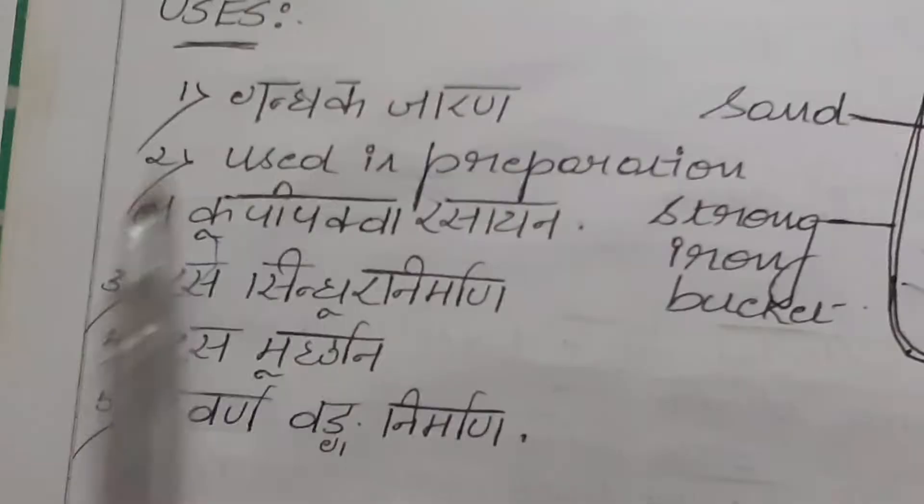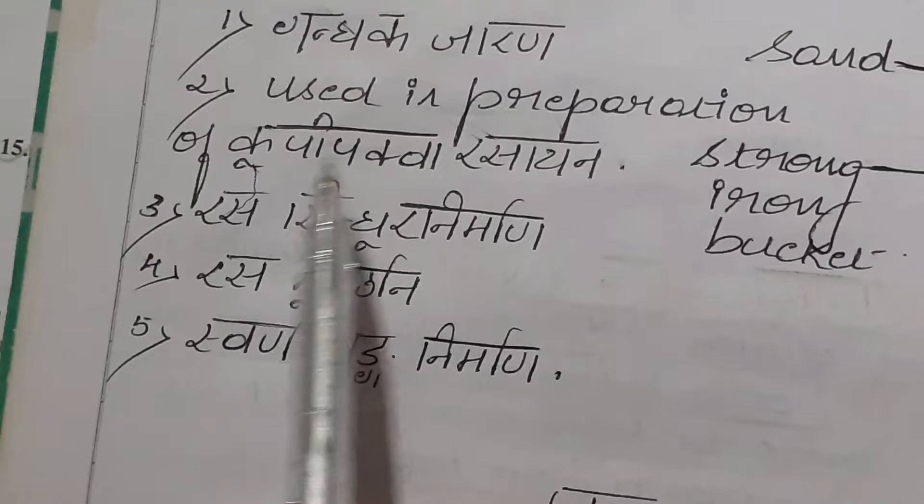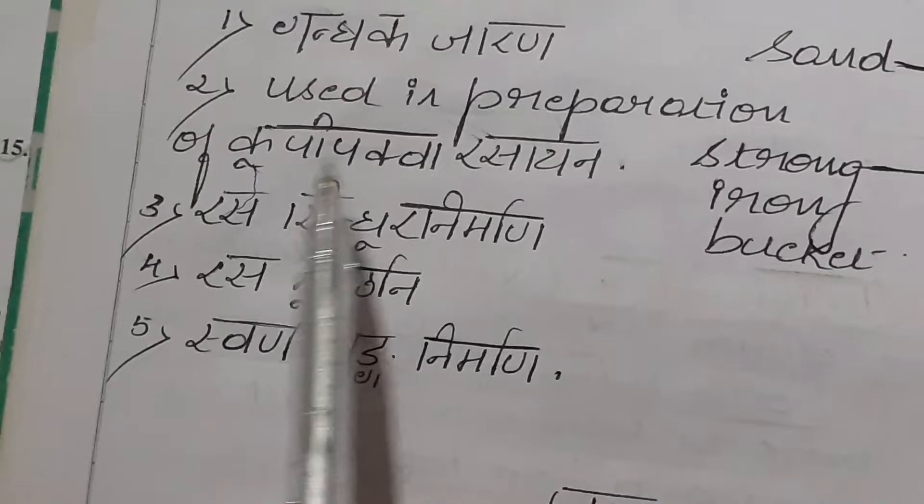Uses of Valuka Yantra: it is used in gandhaka jarana, in preparation of kupipakva rasayana, in rasa sindoora nirmana, in rasa murshana, and also in swarna and vanga nirmana. Thank you.